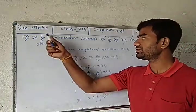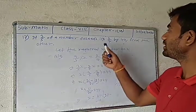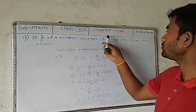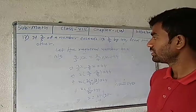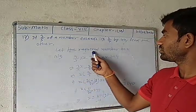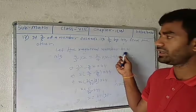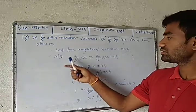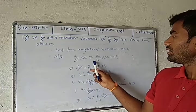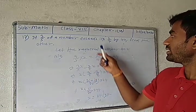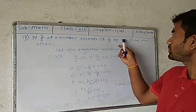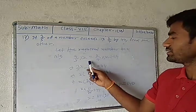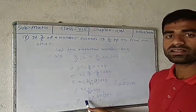So we have 3/5 of x minus 2/7 of x equals 44. We will calculate the value of x.